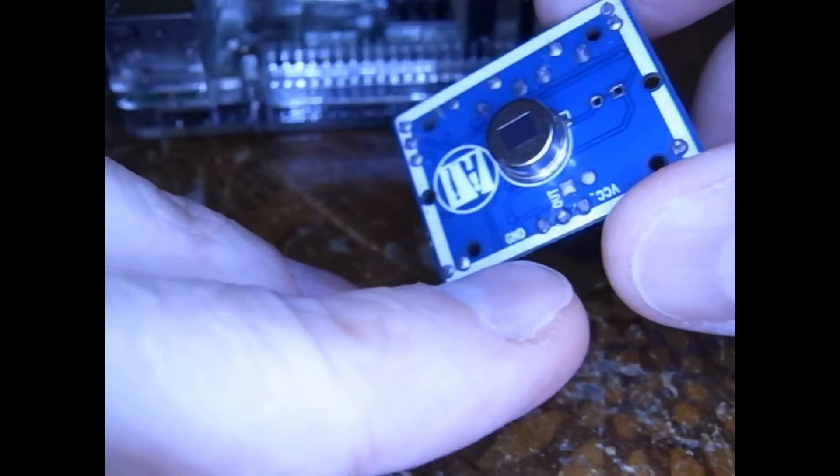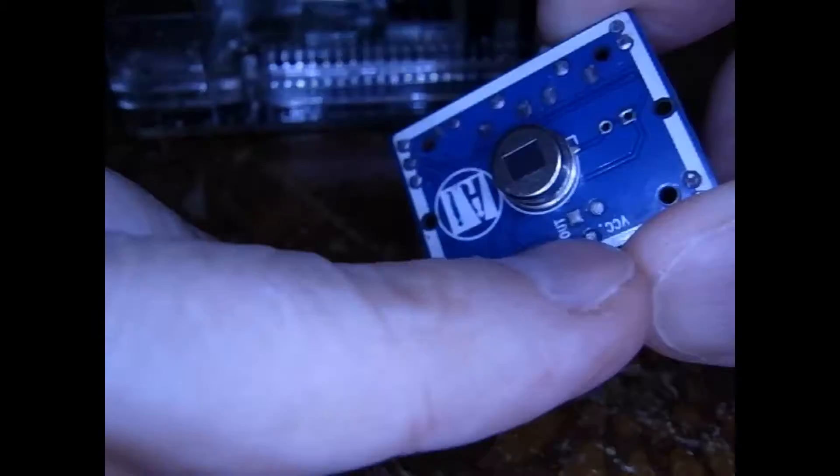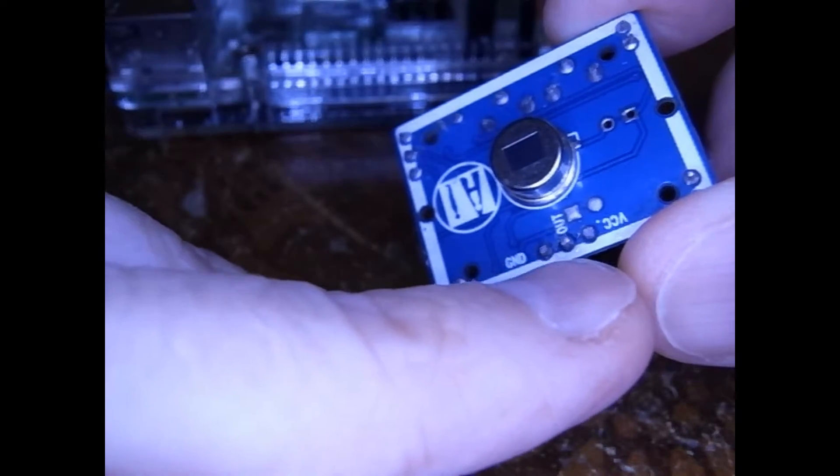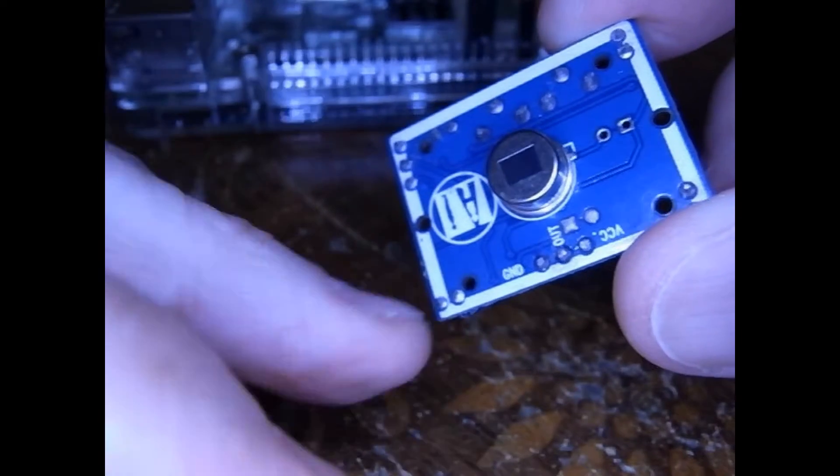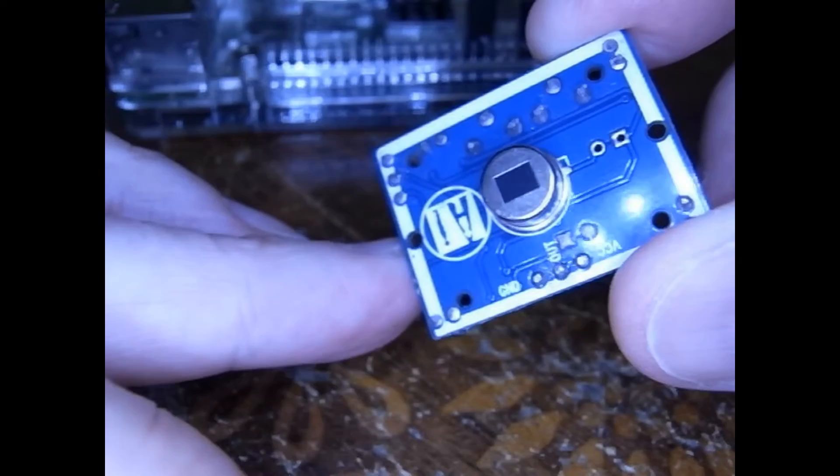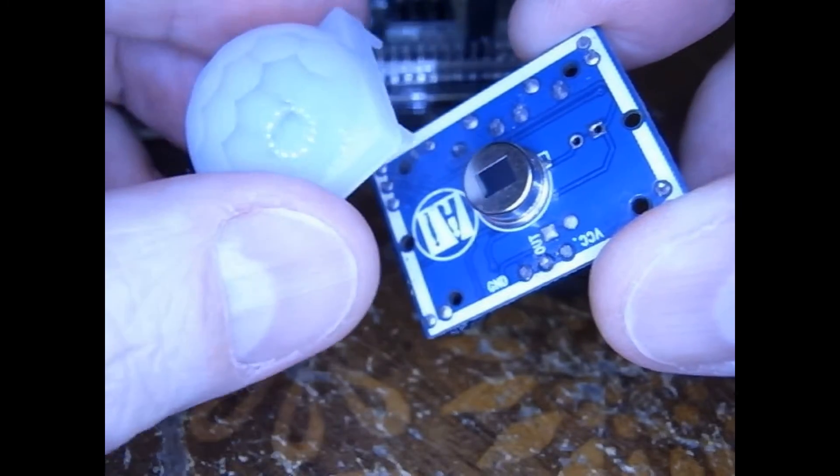Also notice that this is where the markings are for the power, ground and output. So it's not on the other side of the board where the pins actually are. Let's go look at the back side.